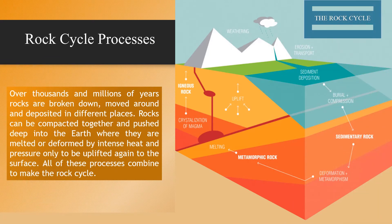Rock cycle processes. We learned about the three rock types: igneous, sedimentary, and metamorphic. We also learned that all of these rocks can change — these changes are all part of the rock cycle. The rock cycle describes each of the main types of rocks, how they form, and how they change. Over thousands and millions of years, rocks are broken down, moved around, and deposited in different places. Rocks can be compacted together and pushed deep into the Earth where they are melted or deformed by intense heat and pressure, only to be uplifted again to the surface.